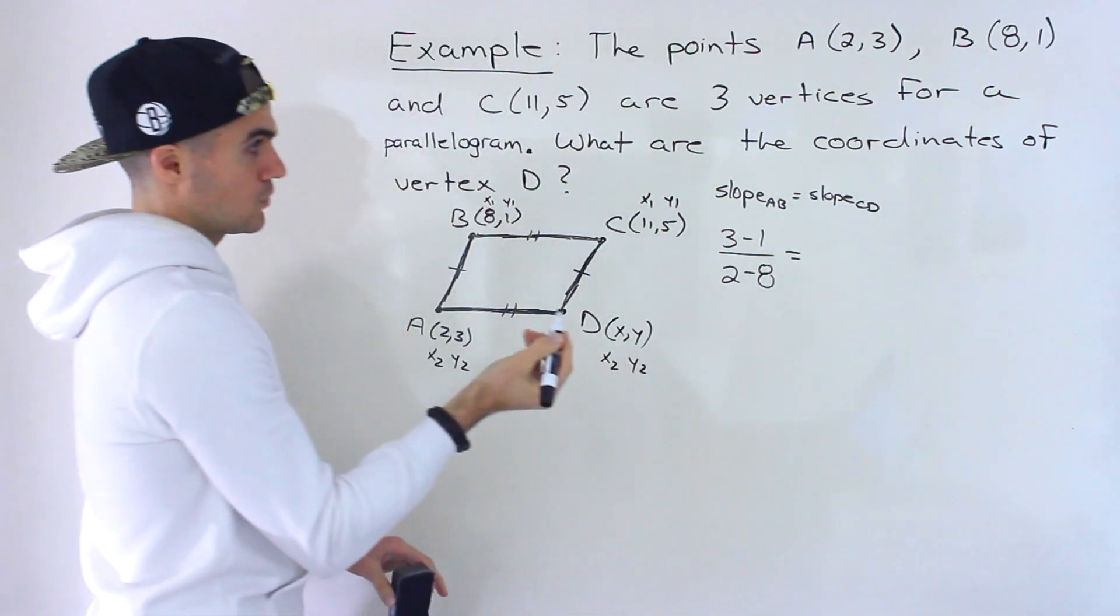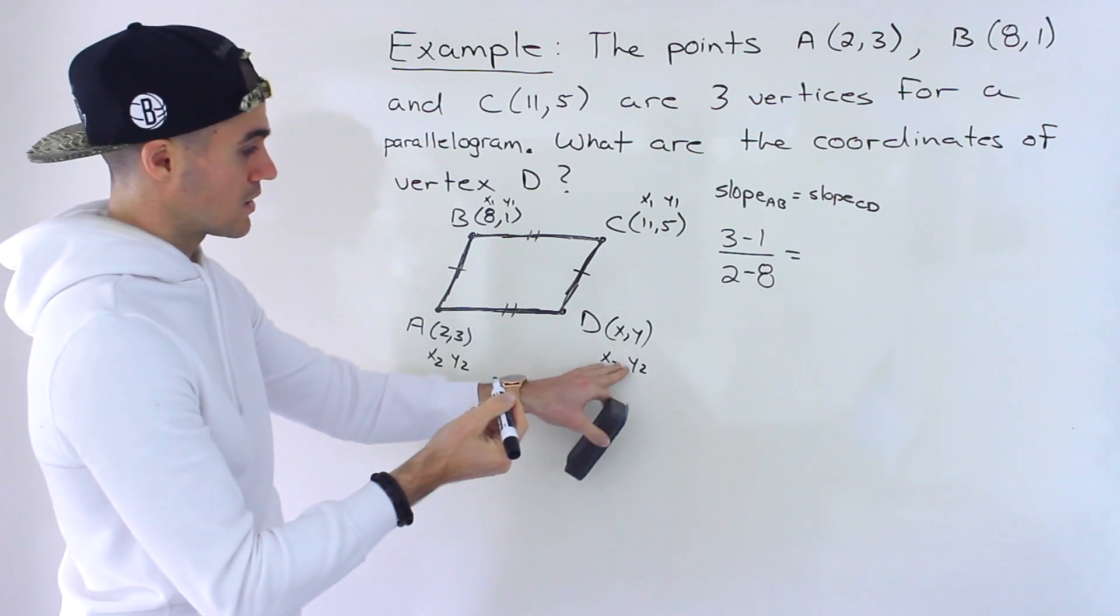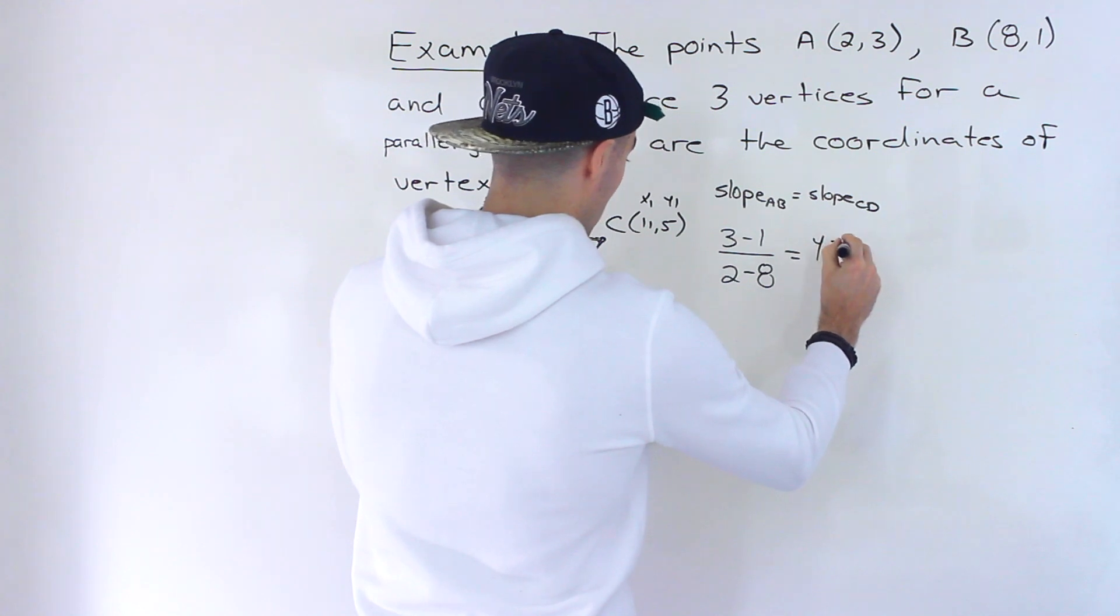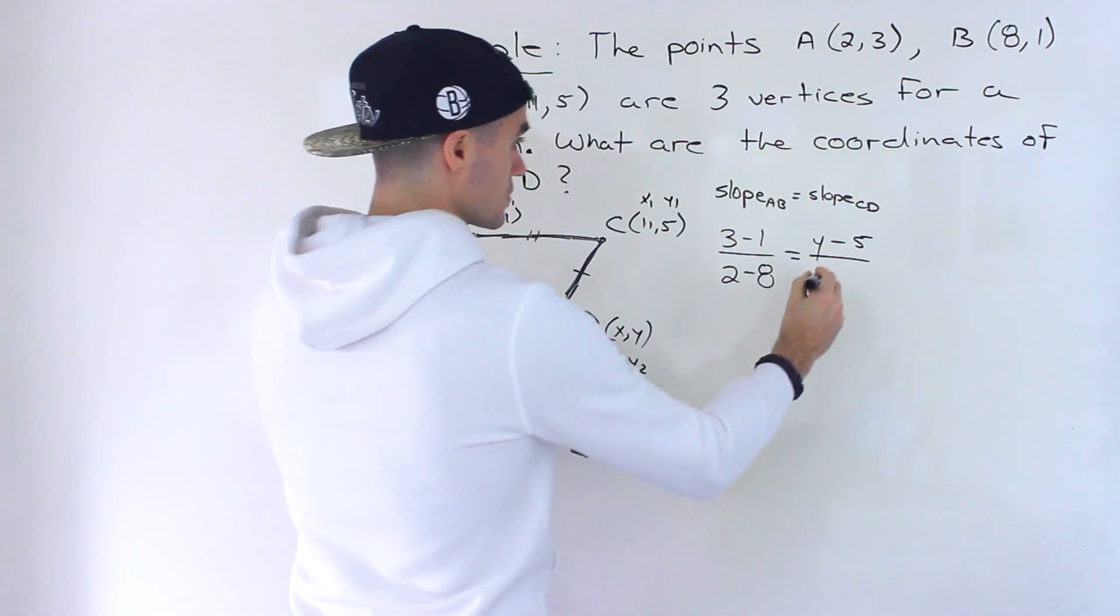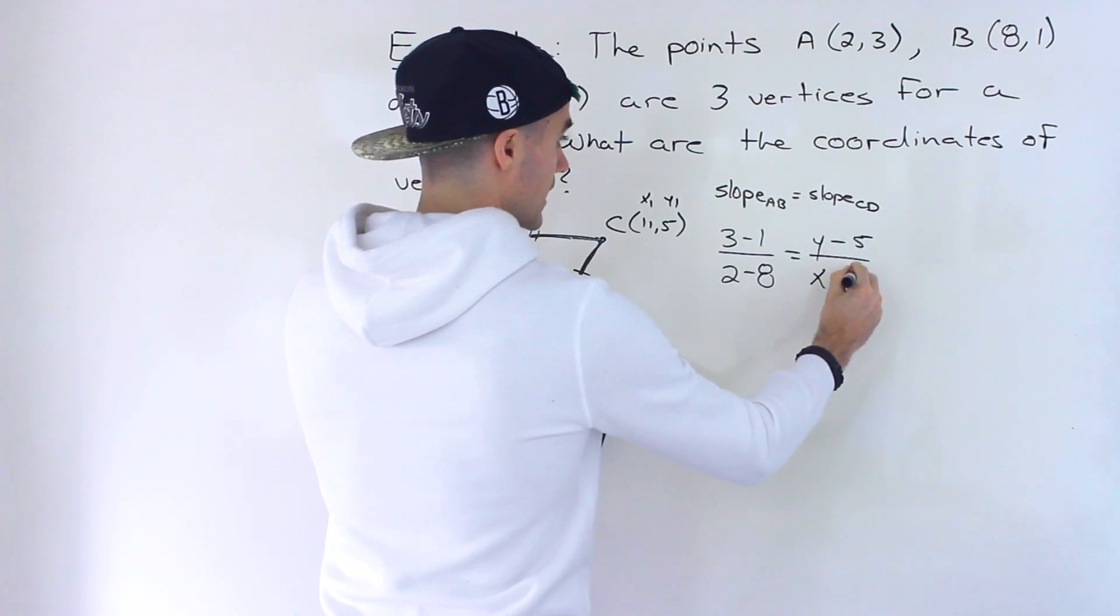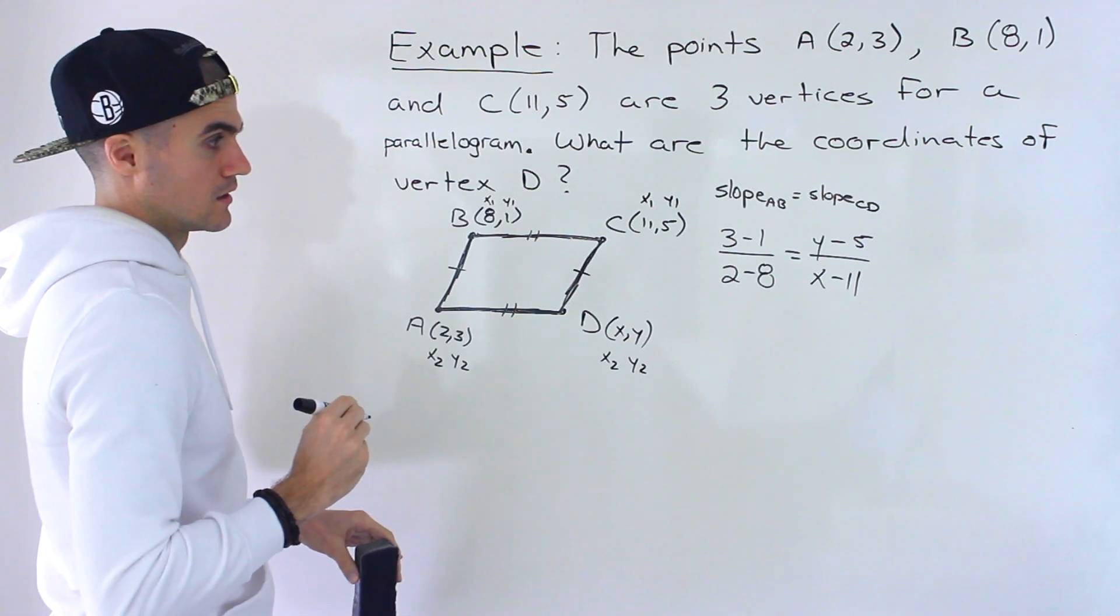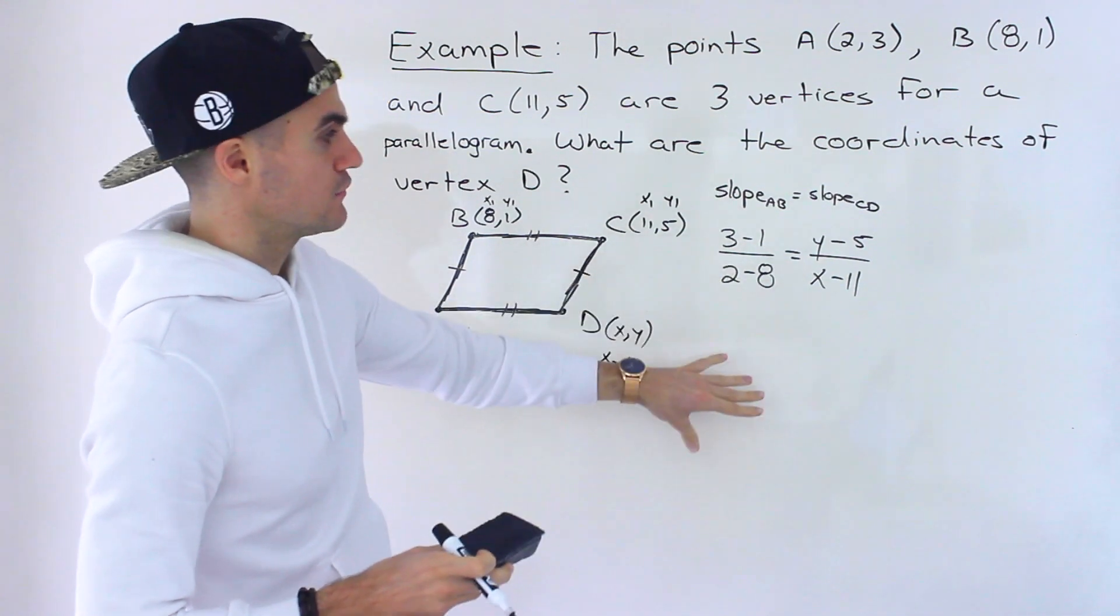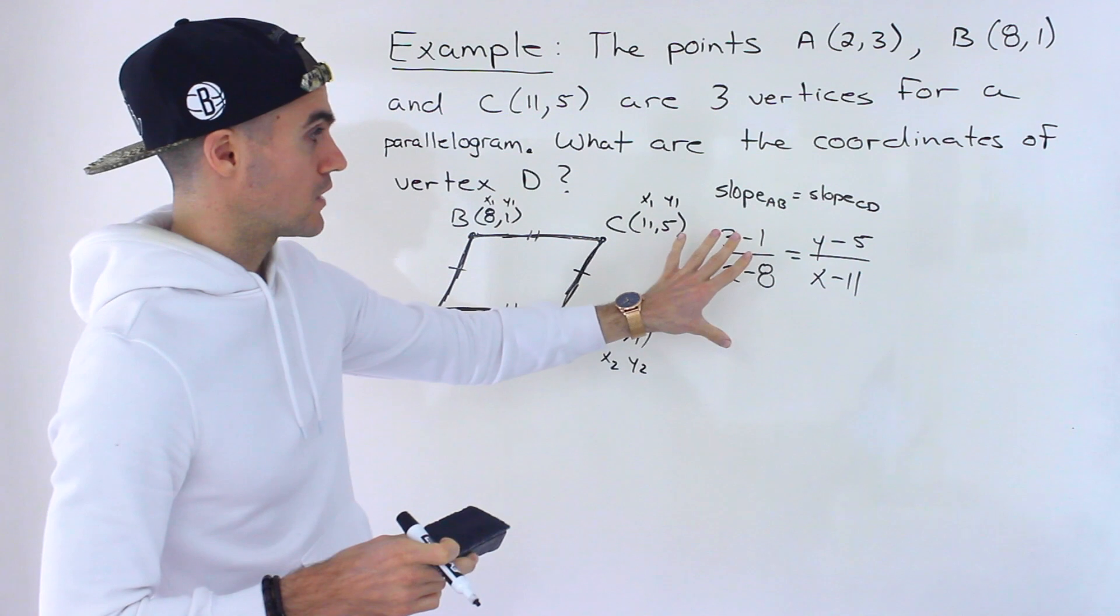And then what's the slope of CD going to be? Well, same thing, X2, which is just, or sorry, Y2, which is just Y, that's what we're solving for. So that's going to be a variable here, Y minus Y1, which is 5, over X2, X minus X1, which is 11. Okay, so that is one of the equations. We're going to have to simplify this further, but I'm just going to leave it like that for now.